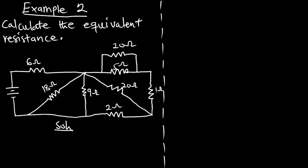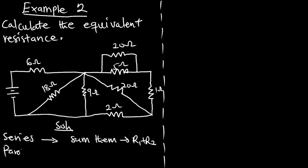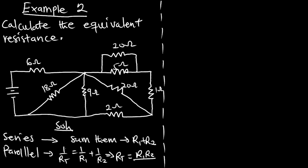First, we know that when two resistors are in series we just sum them: R_total = R1 + R2. When resistors are in parallel, the total resistance is given by R_total = (R1 × R2) / (R1 + R2). I'll be using this expression for parallel connections throughout this episode.